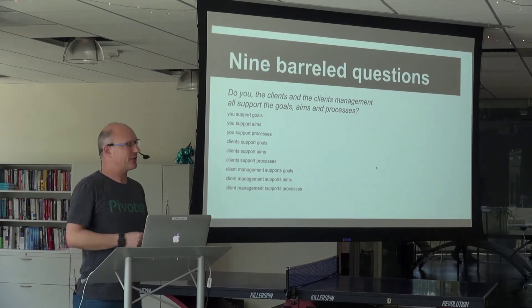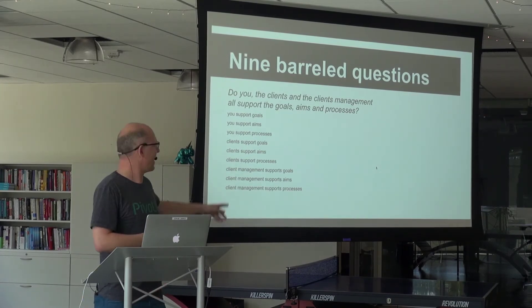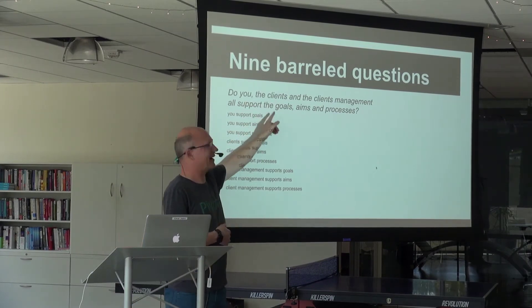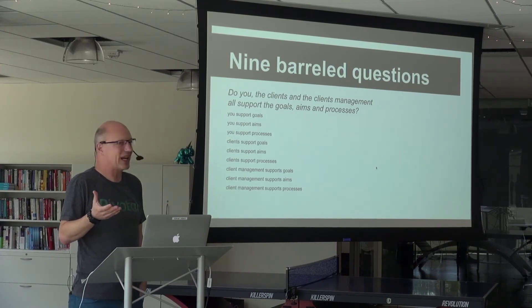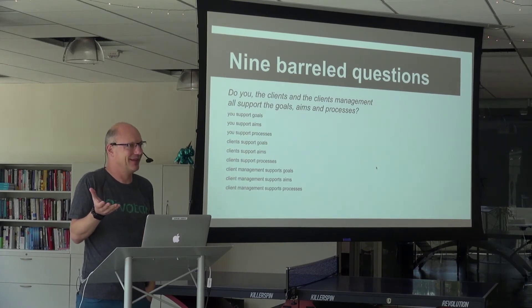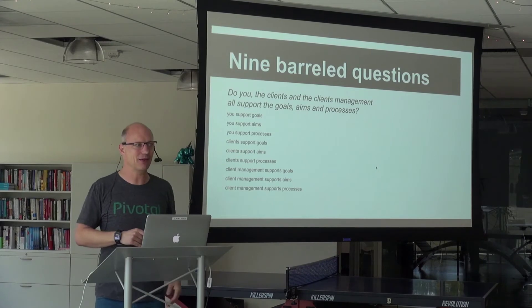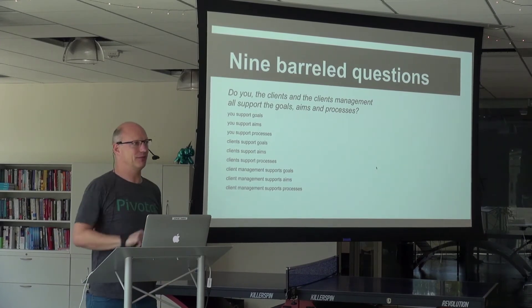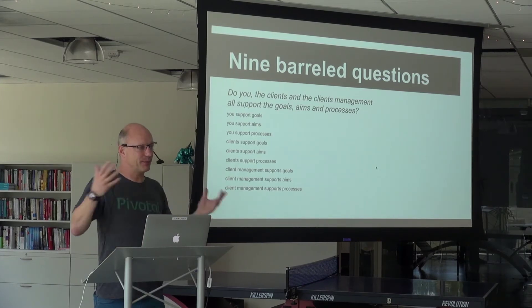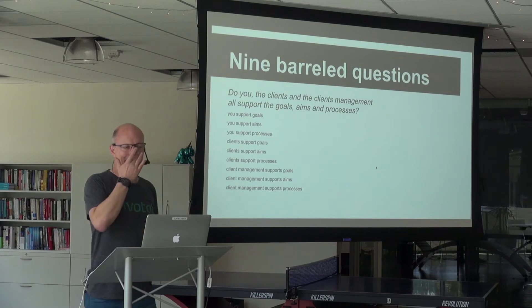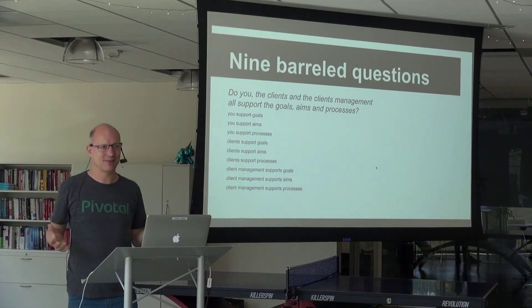The upcoming survey for pivot engineers had an interesting one: 'Do you, the clients, and the client management all support the goals, aims, and processes?' If you write this out, this is nine questions in one — three groups times three things they can agree on. I don't even know where to start on that answer, because there were enormous differences between the clients and the client management — they were completely at odds. I'm probably going to pick the middle. That's the problem of a double-barreled, or in this case, nine-barreled question. If you split up all these questions, you get too many. So again, you have to pick and choose.